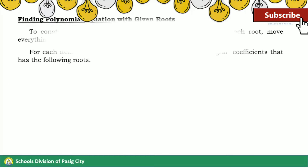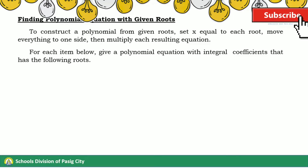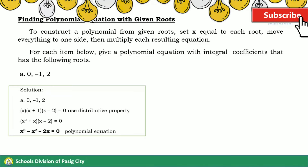Moving on to finding a polynomial equation with given roots. To construct a polynomial from the given roots, set x equal to each root and move everything to one side. Then multiply each resulting equation. For letter A, the roots are 0, −1, and 2. Setting x equal to each root and multiplying each resulting equation, the roots give us the polynomial equation x³ − x² − 2x = 0.